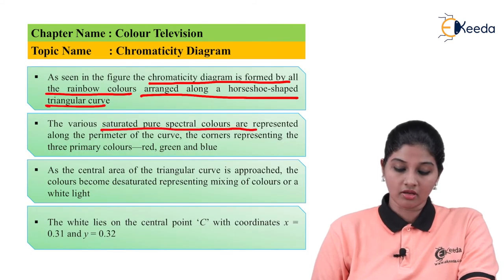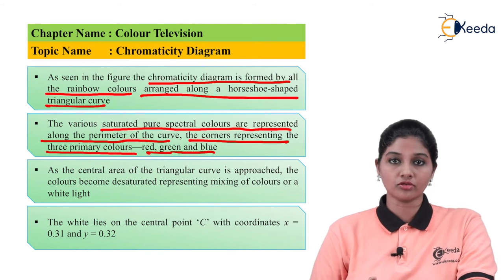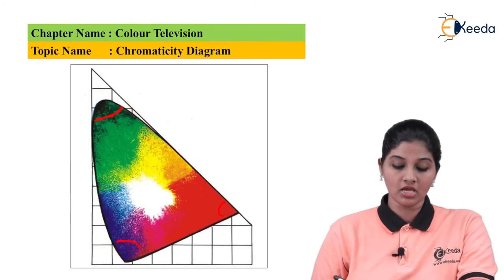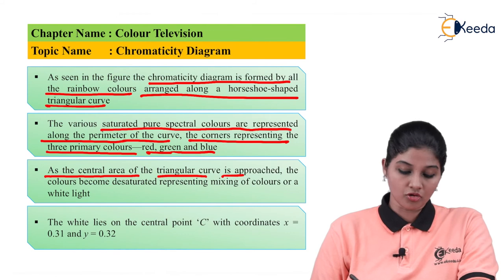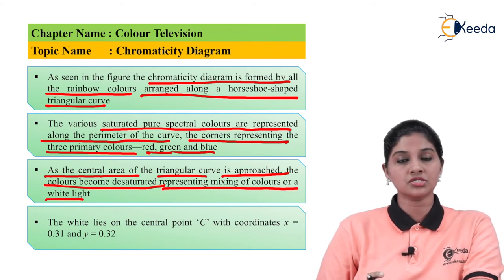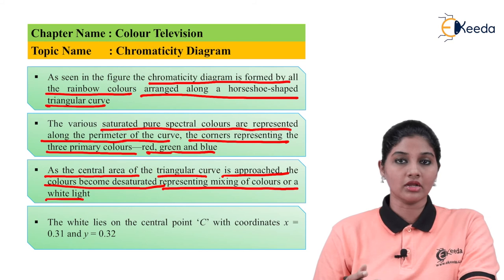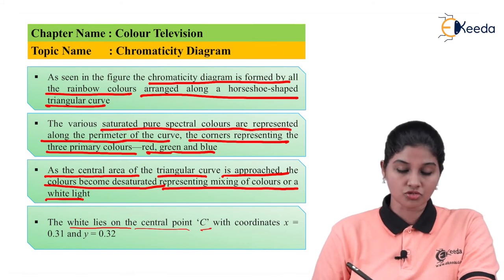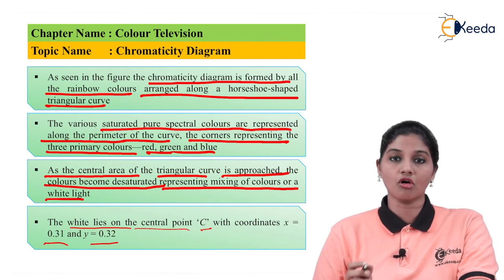The various saturated pure spectral colors are represented along the perimeter of the curve, and the corners represent the three primary colors R, G, and B. As the central area of the triangular curve is approached, the color becomes desaturated, representing a mixture of colors or white. When we move to the center, more and more white is added into the mixture. The white color lies at central point C with coordinates X = 0.31 and Y = 0.32.